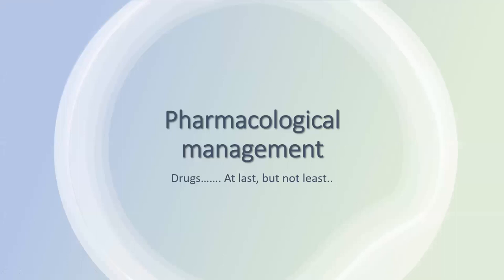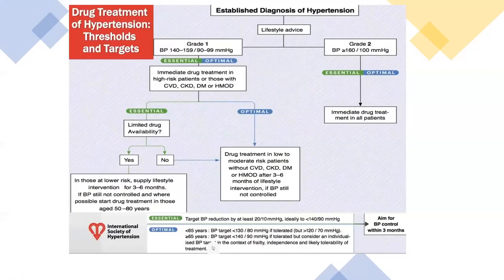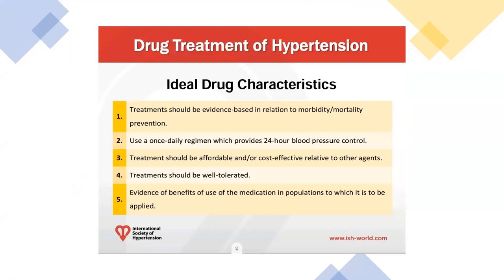Moving to pharmacological management: Grade 2 and above require immediate drug initiation; Grade 1 without comorbidities can wait three to six months. Ideal antihypertensive treatment should be evidence-based in relation to morbidity and mortality, use a once-daily regimen providing 24-hour control, be affordable and cost-effective, be well tolerated, and have evidence of benefits in the relevant population.